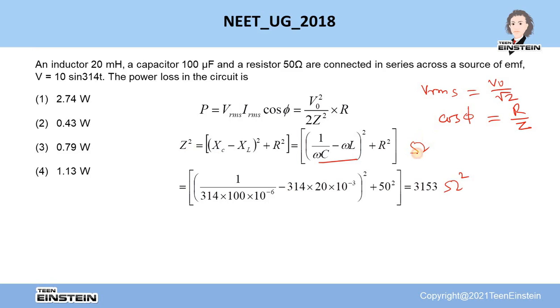After getting this, if you put the value of Z, V, and R and do the calculation, you will see that the power loss in this particular series LCR circuit will be nearly equal to 0.79 watt. So it will be nearly 0.79 watt, and the third option will be the correct answer for this question. Thank you.